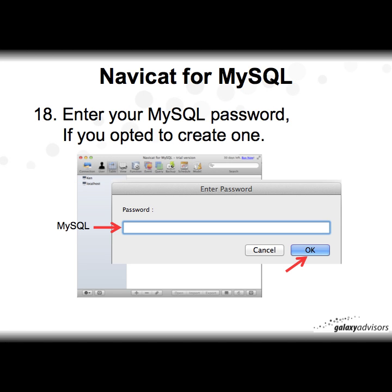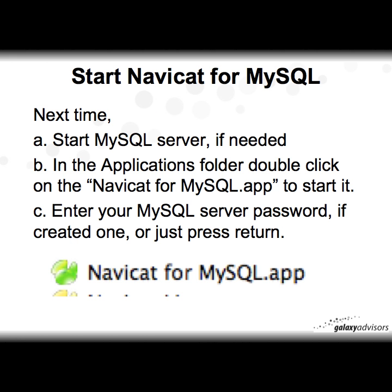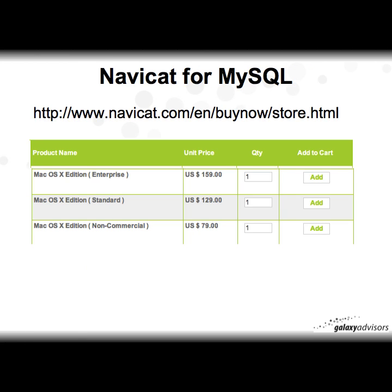When you click localhost it will prompt you for your MySQL password. If you didn't create one, just click Enter or OK. You'll then see the databases that are available. Going forward, it's pretty easy: start MySQL server if needed, then in the Applications folder double-click NaviCat for MySQL to start it, enter your MySQL password or just hit Return, and NaviCat will be up and running.